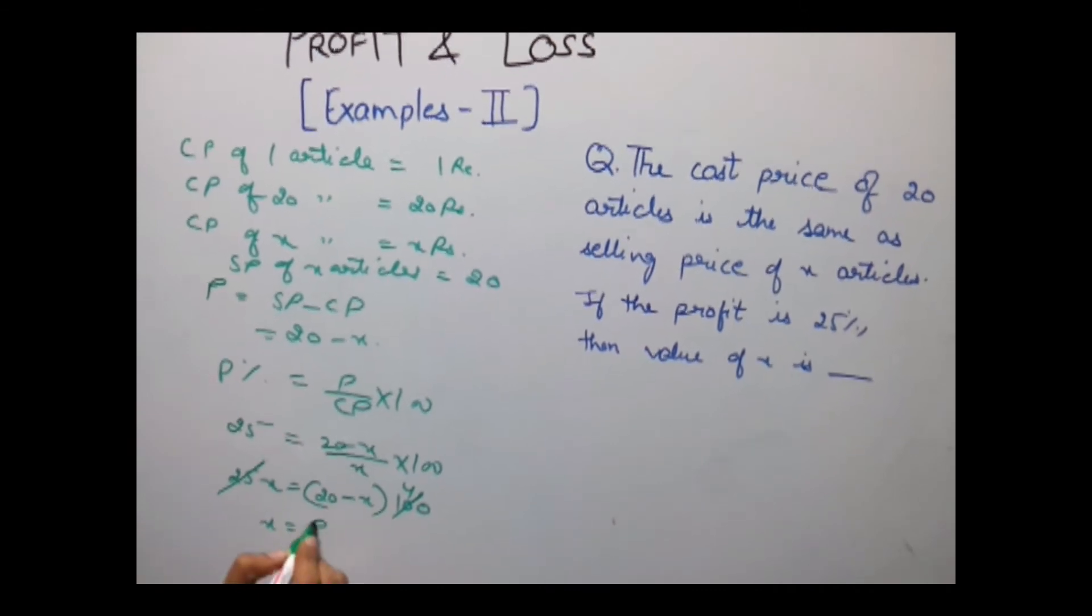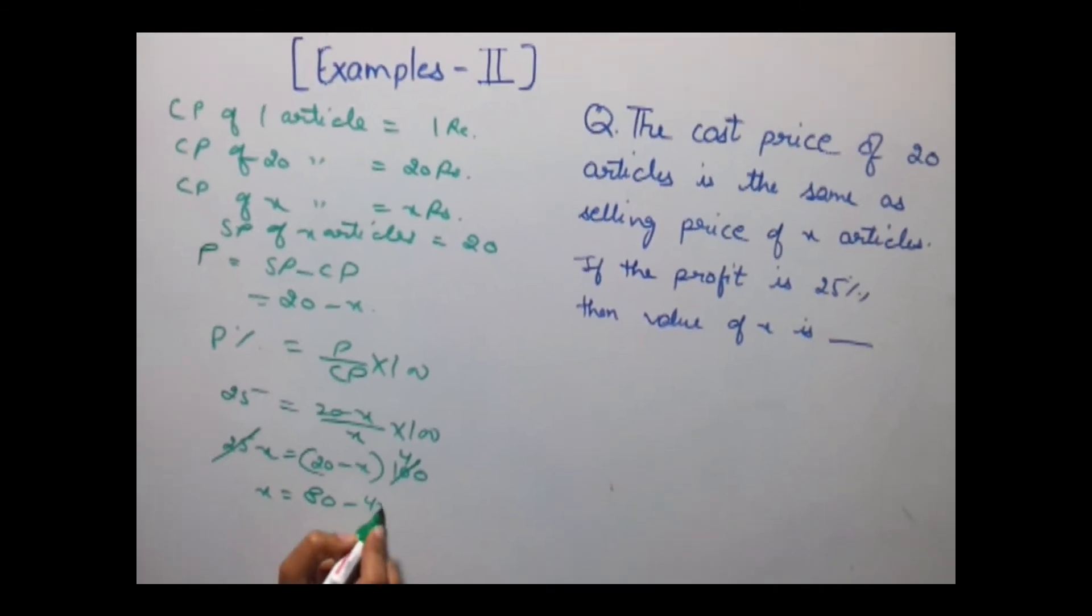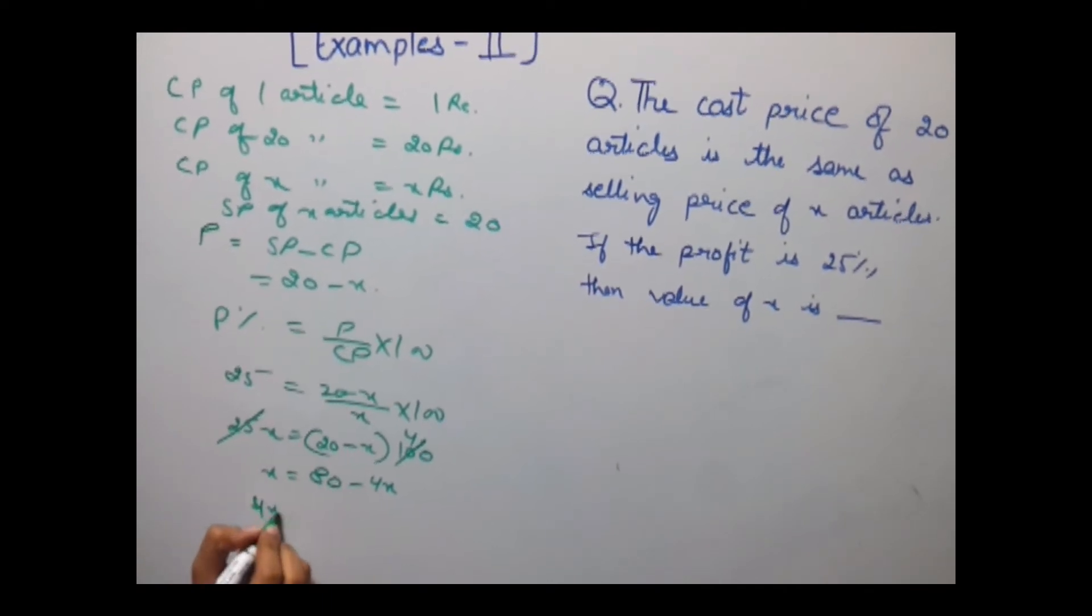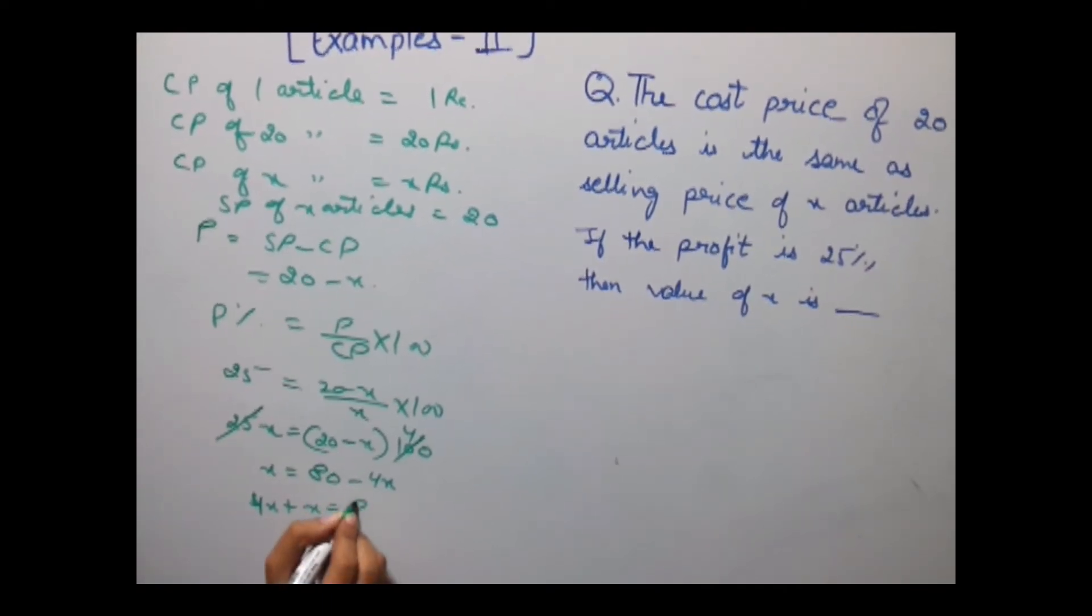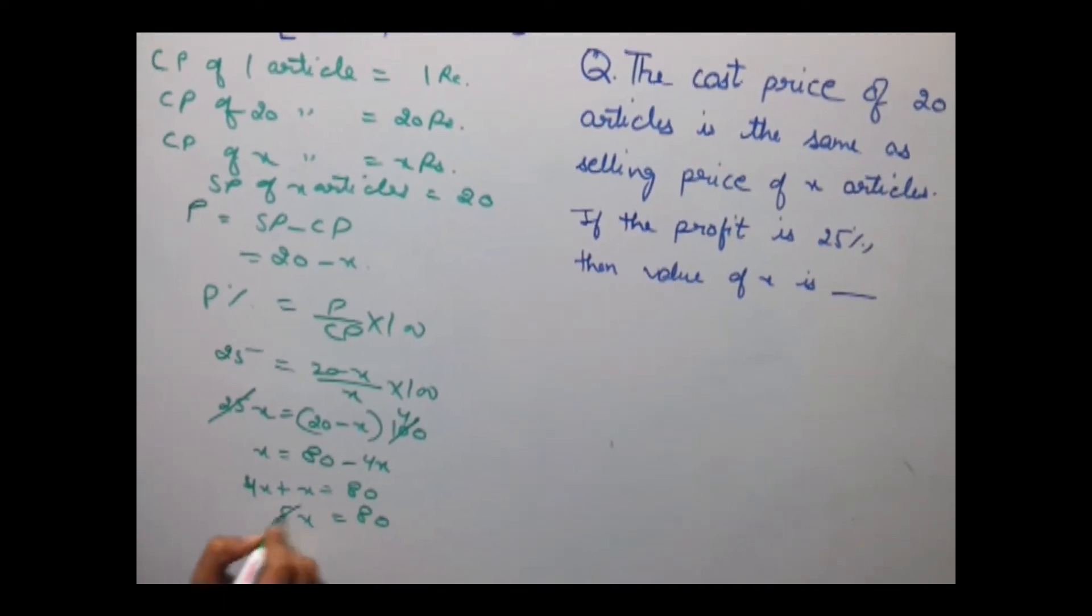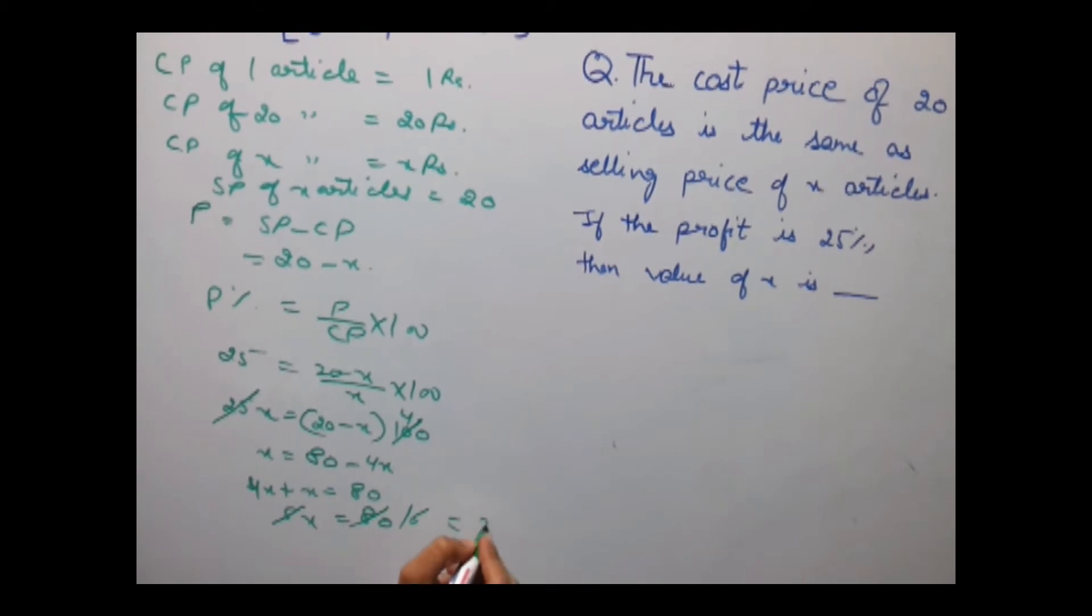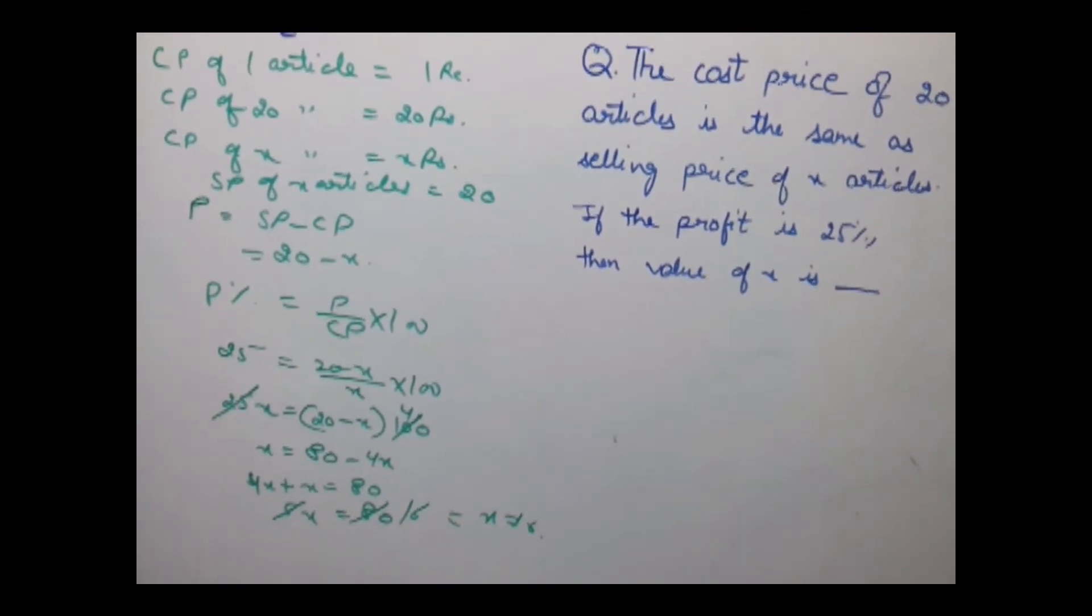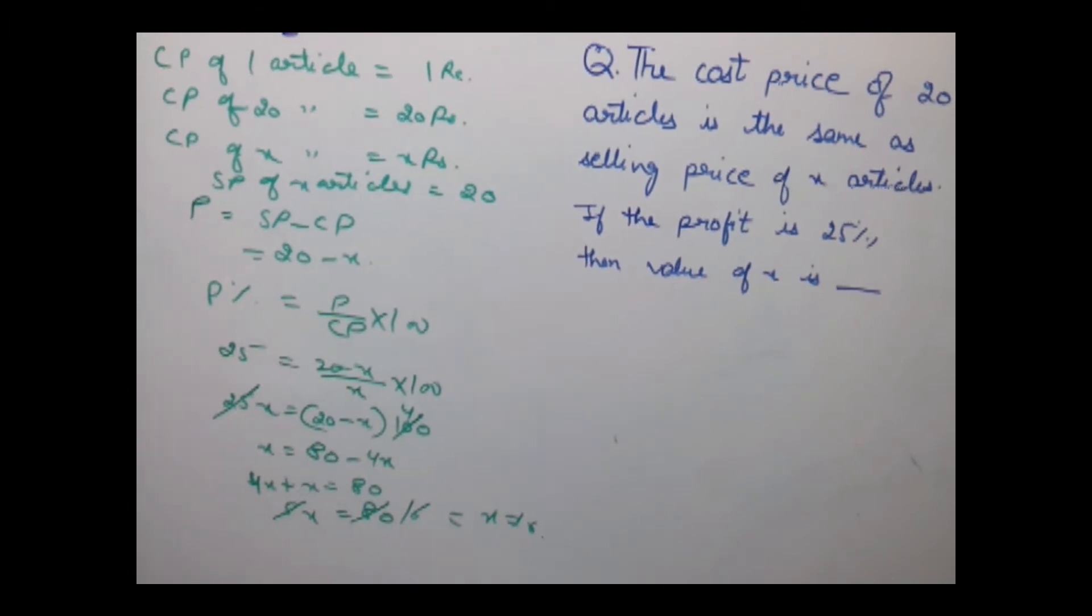25x equals (20 minus x) into 100, which equals 2000 minus 100x. So 25x plus 100x equals 2000, that is 125x equals 2000, x equals 16. So he has sold 16 articles at a price of 20.